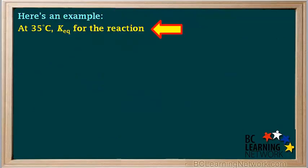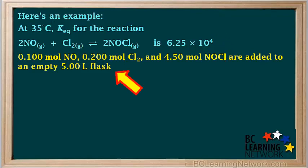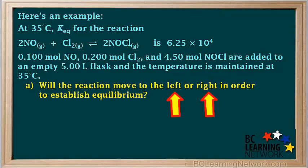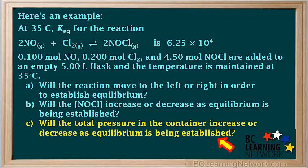Here's an example. At 35 degrees, Keq for the reaction 2NO(g) + Cl₂(g) → 2NOCl(g) is 6.25 × 10⁴. In an experiment, 0.1 mol of NO, 0.2 mol of Cl₂, and 4.5 mol of NOCl are all added to an empty 5-liter flask, and the temperature is maintained at 35°C. Part A asks if the reaction will move left or right to establish equilibrium. Part B asks whether the concentration of NOCl will increase or decrease. Part C asks whether the total pressure will increase or decrease as equilibrium is being established.